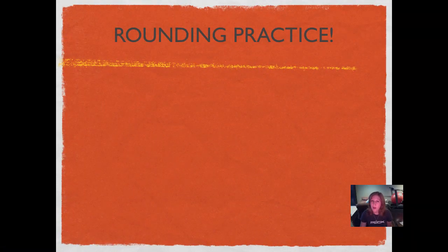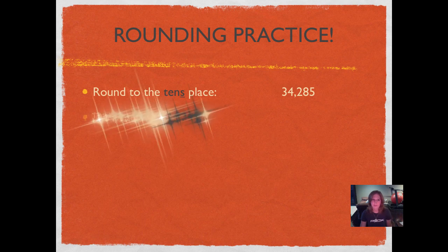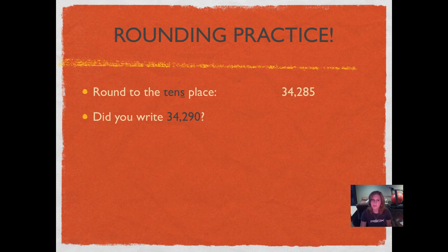Let's use that rounding poem and our place value song to do some rounding practice. Here's our first question: round to the tens place. Write down your answer in your journal. Pause and push play again when you're ready. Did you write 34,290?